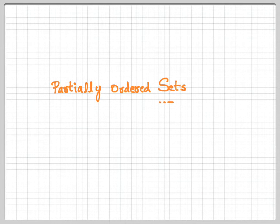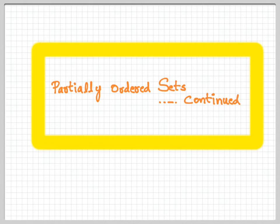We will now discuss partially ordered sets as a continuation of what we discussed before. We defined what is a partially ordered set, saw a few examples, and even saw a small theorem which said that a partially ordered set can never contain a cycle.